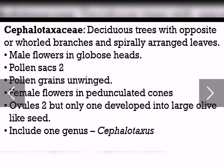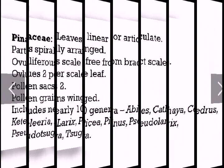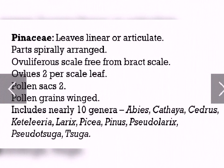Next, let us discuss Cephalotaxaceae. Members of this family are deciduous trees with opposite or whorled branches and spirally arranged leaves. Male flowers are borne in globose heads and bear two pollen sacs with unwinged pollen grains. Female flowers are in pedunculated cones. Out of two ovules, only one develops into a large olive-like seed.